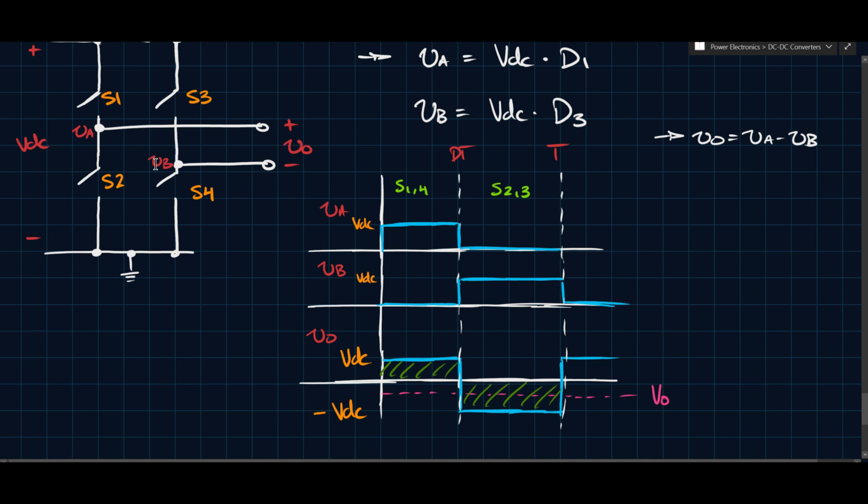So the full bridge is, it shines when you need positive and negative voltage and then positive and negative output current, let's call it IO here.